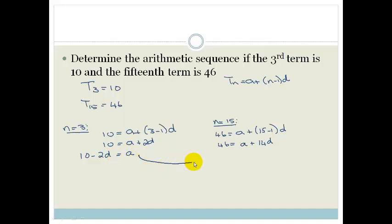And then what I could do is substitute that into that a equation. So I'd get 46 = wherever I see an a, I'm now going to write 10 - 2d plus 14d. So that becomes 46 = 10 - 12d. So when we take this, this becomes 36 = -12d.